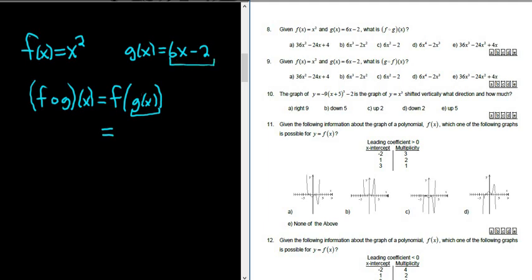So little g is your inside piece. So step one is just to replace this inside piece. So we still have the f, then we have 6x minus 2, simply replacing little g with 6x minus 2. And now we're looking at f of 6x minus 2.